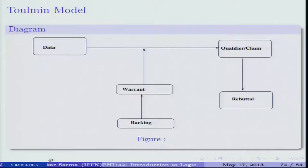Obviously someone will be claiming something — we call that the claim or conclusion. The conclusion could be something like 'the earth is spherical in nature.' We need some kind of data, and what connects data and claim is a warrant. The warrant needs to be backed up by backup propositions, and any claim should also have qualifiers and be open to rebuttals.